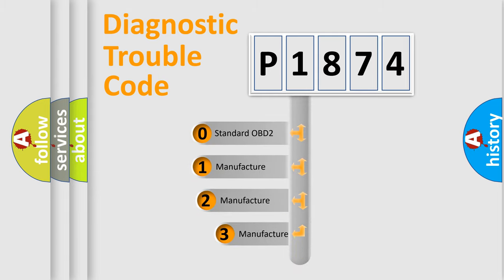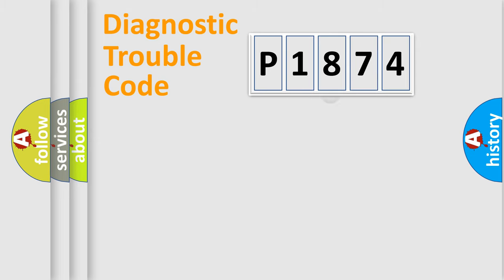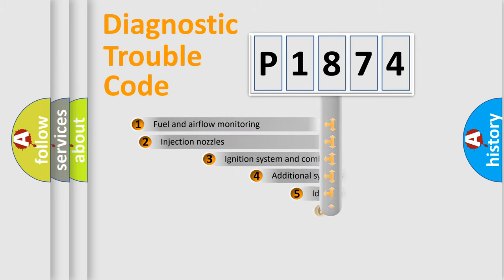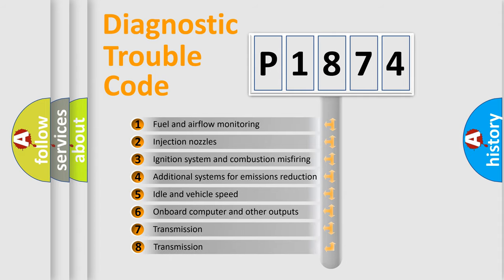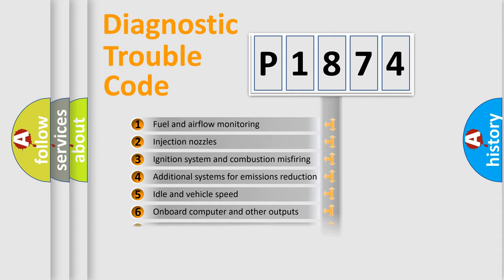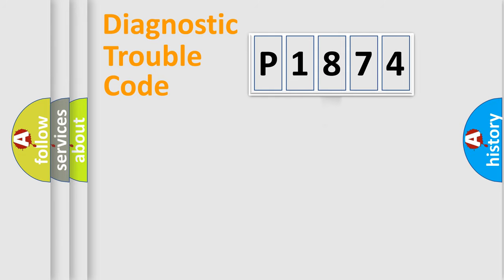If the second character is expressed as zero, it is a standardized error. In the case of numbers 1, 2, or 3, it is a car-specific error. The third character specifies a subset of errors. The distribution shown is valid only for the standardized DTC code.